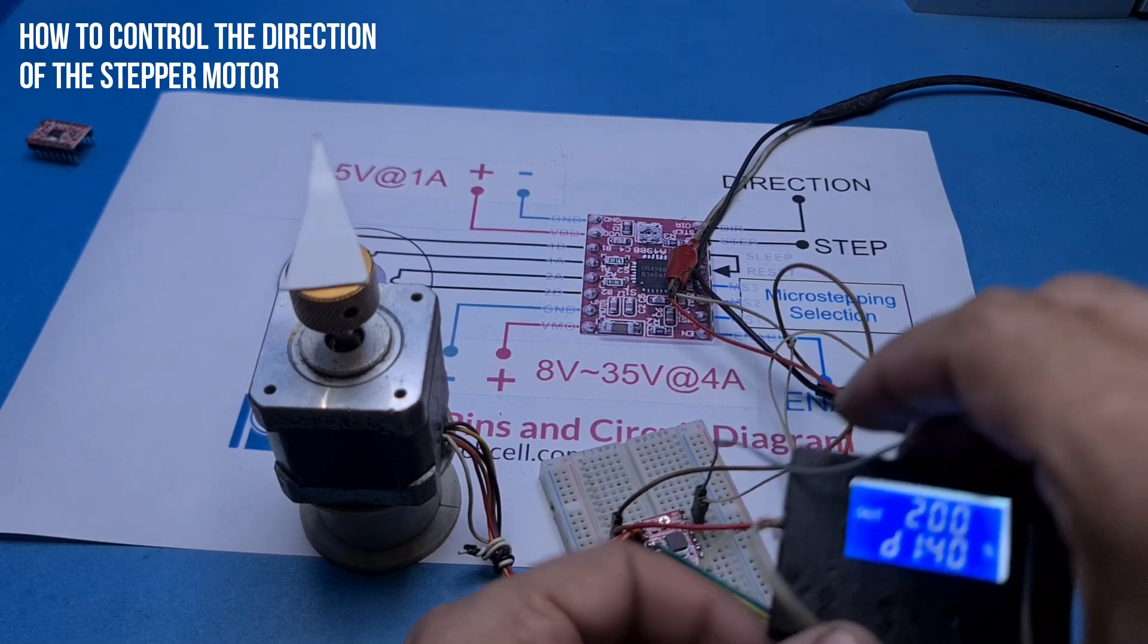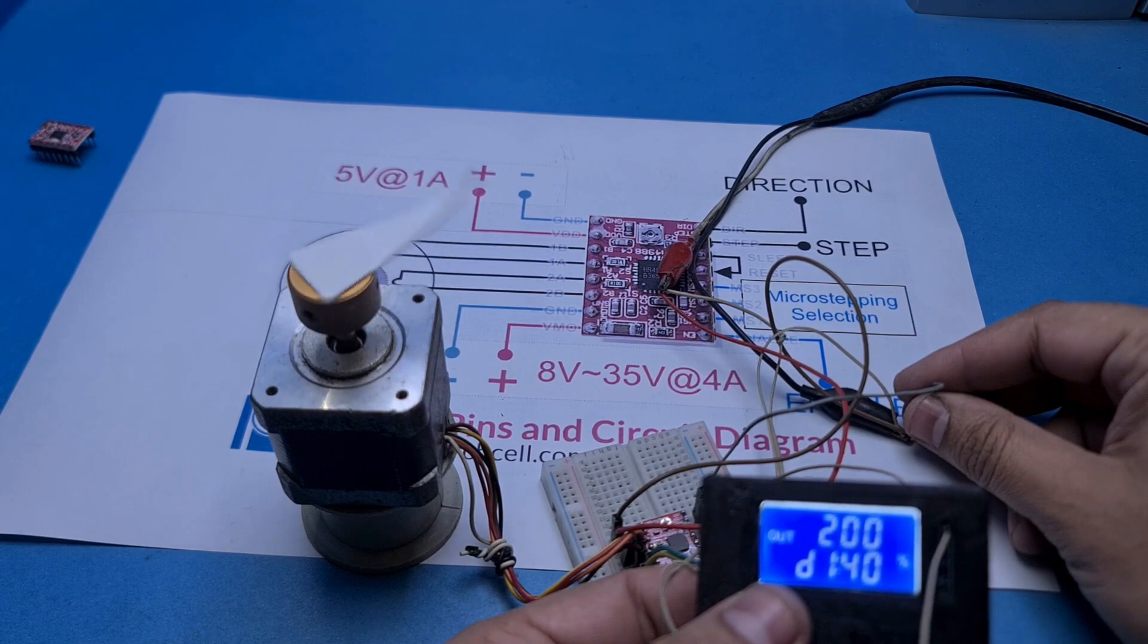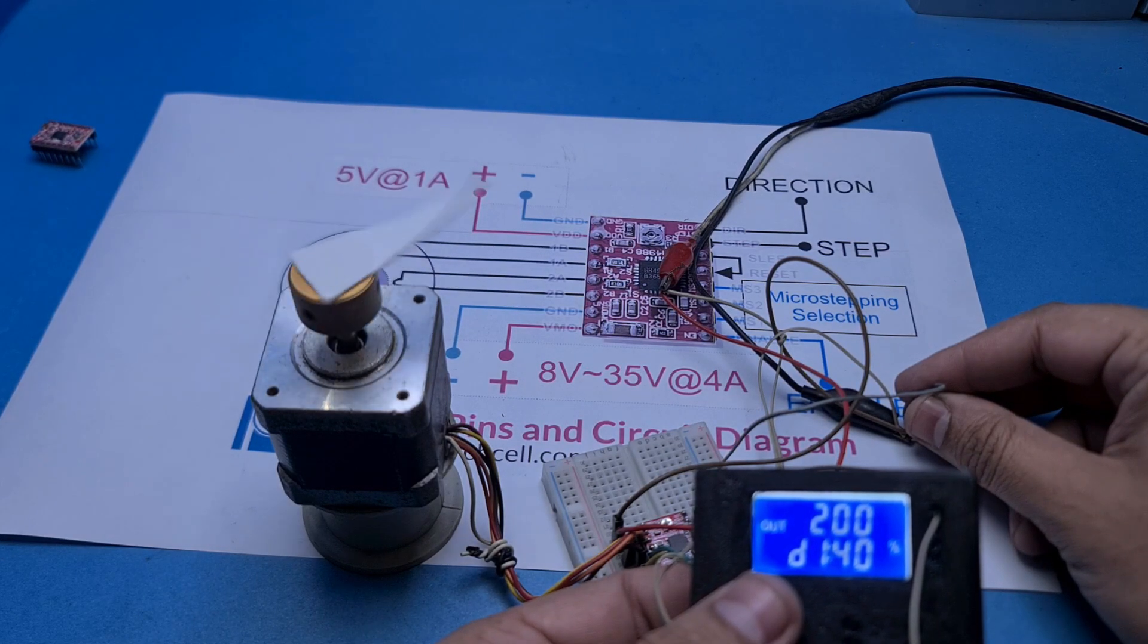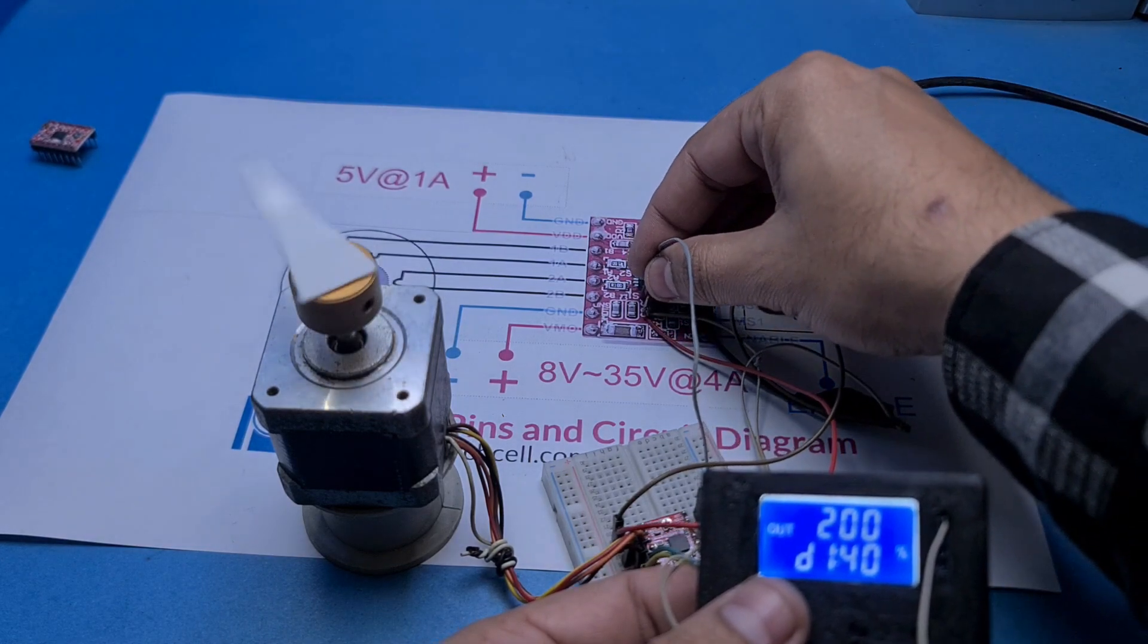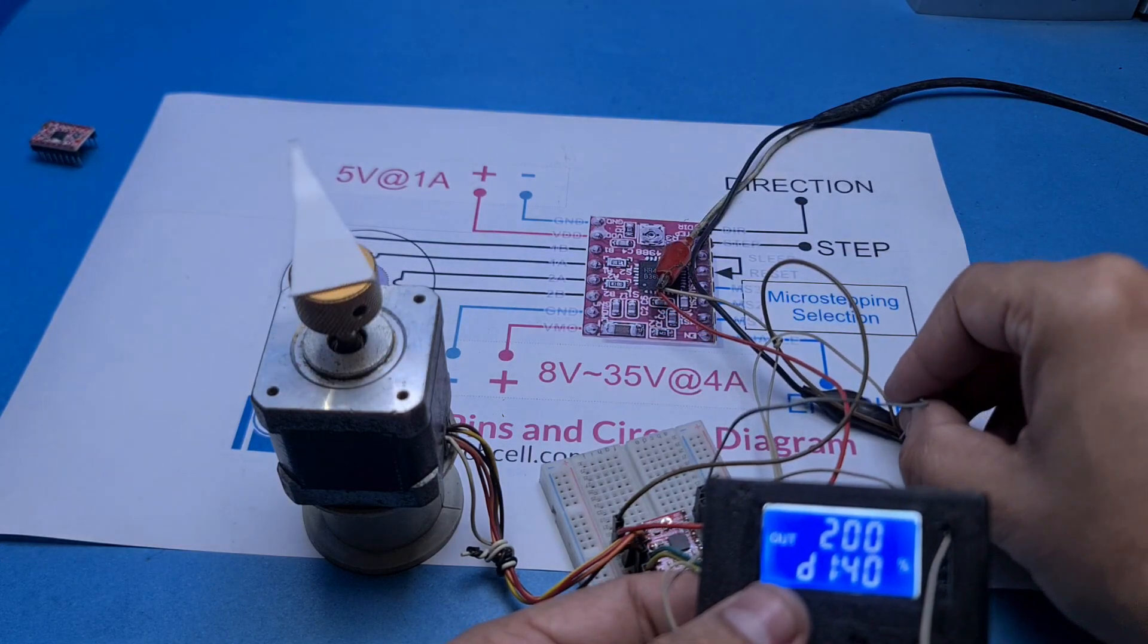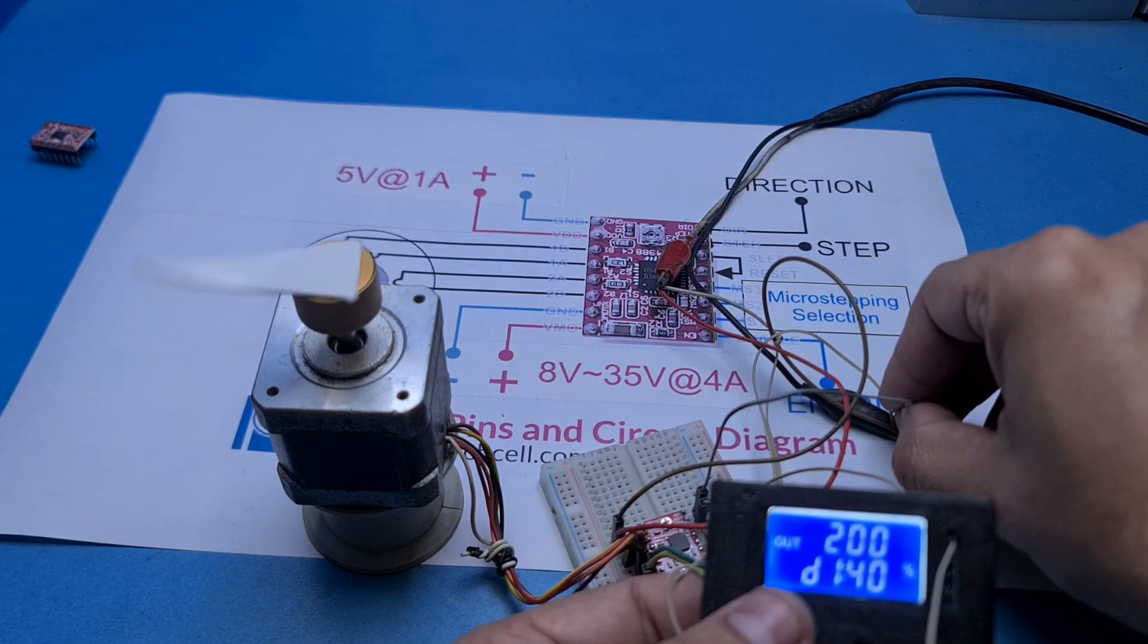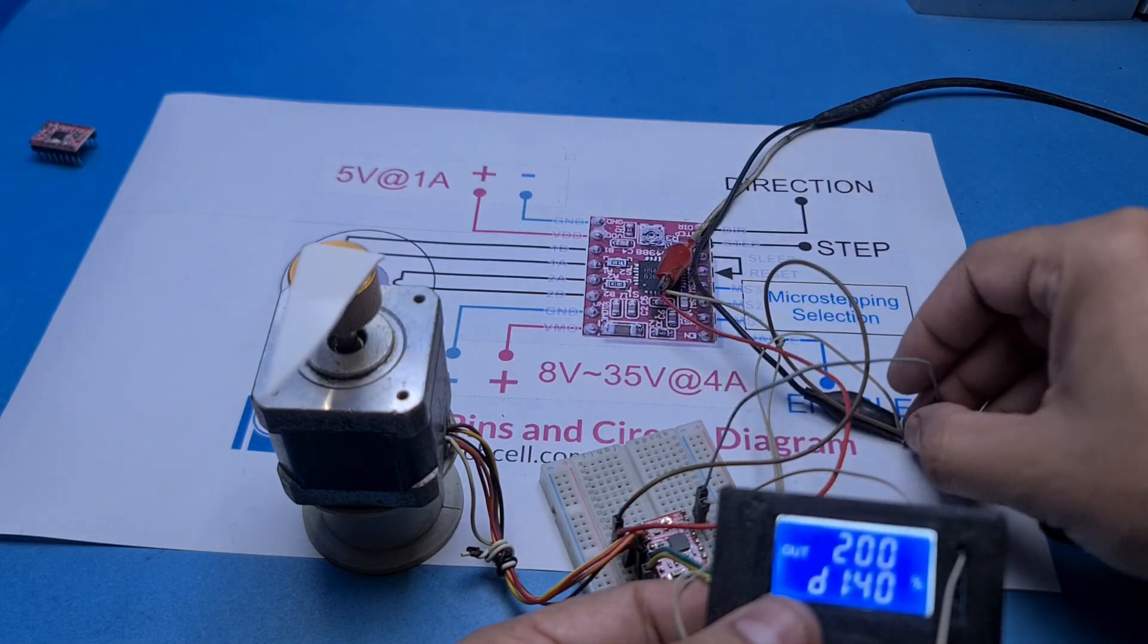You can connect the direction pin of the A4988 with ground or plus 5 volt to change the direction of your stepper motor. You can see that when I connect the direction pin with the ground, the motor starts to rotate anti-clockwise, and when I connect the direction pin with plus 5 volt, the motor starts to rotate clockwise.